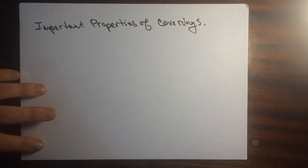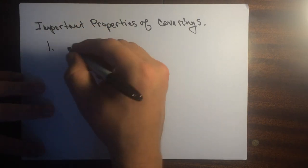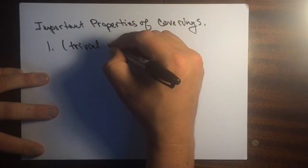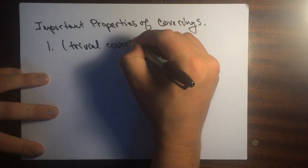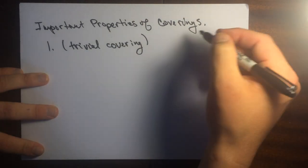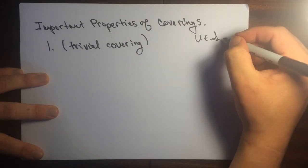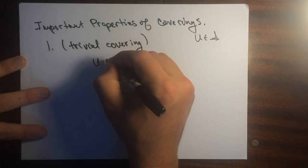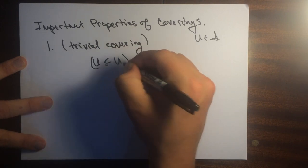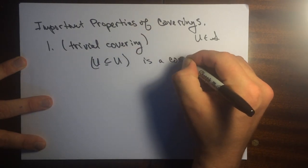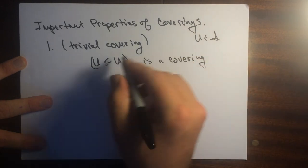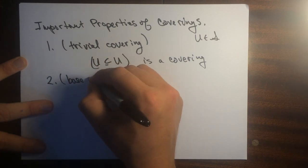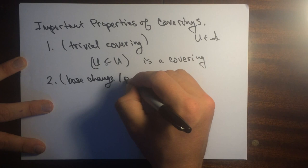The idea is he did three things. There are three axioms or three observations. If we're given an object U in S, so this is maybe the open sets of a topological space, it says that this trivial covering is a covering. And so these are going to be collections of maps.